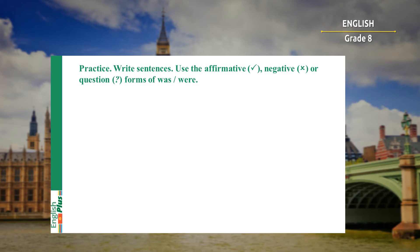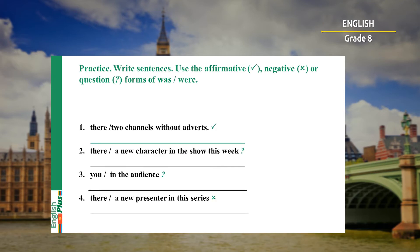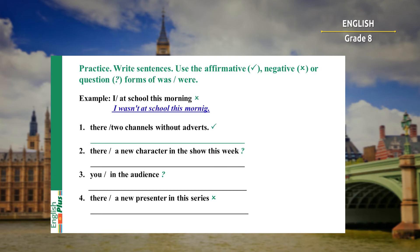Now let's practice more. Your task is to write these sentences and use the affirmative, negative or question forms of 'was' and 'were'. Look at the example: 'I at school this morning' – we see that this sentence is negative and 'I' is singular, so we should put 'was' in negative form: I wasn't at school this morning. For four sentences, you have three minutes.